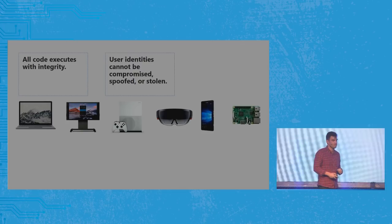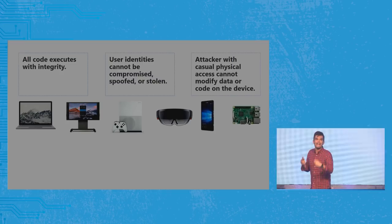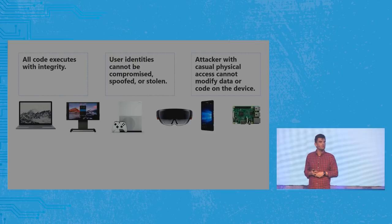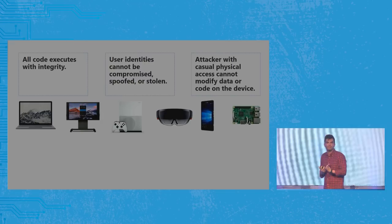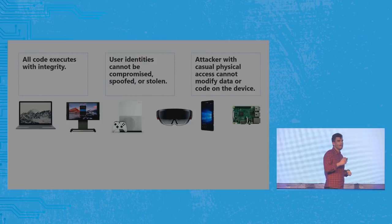The third promise: casual physical access — meaning I lost my phone for 10 minutes, someone was in my hotel room for 20 minutes — we may not be able to stop JTAGs or fault injection for consumer hardware, but at least for casual physical access, which would make most of us feel better traversing international airports, we want to ensure that attackers with physical access can't steal data or inject code.